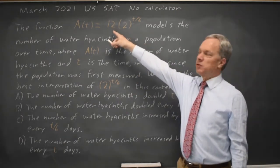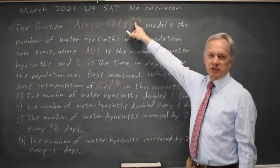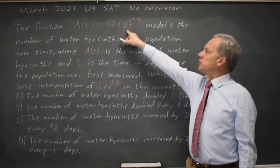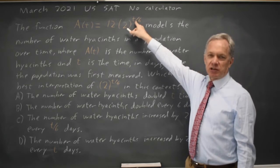We have a constant 12 times the base 2 where the base 2 is raised to the power t over 6. When you have a base to a power that's exponential if the variable is in the exponent.